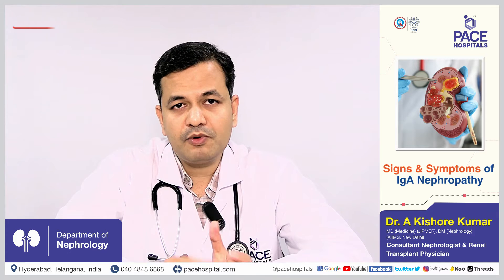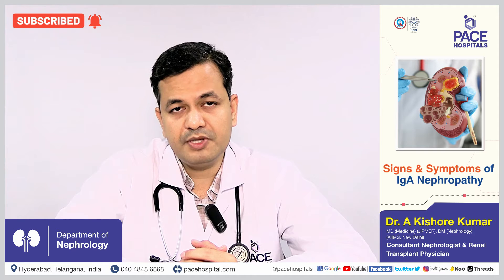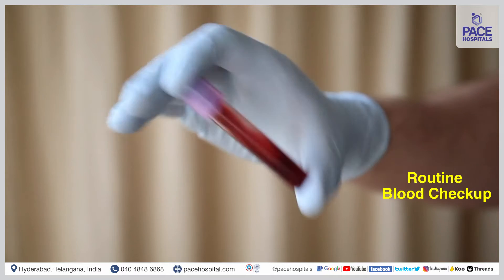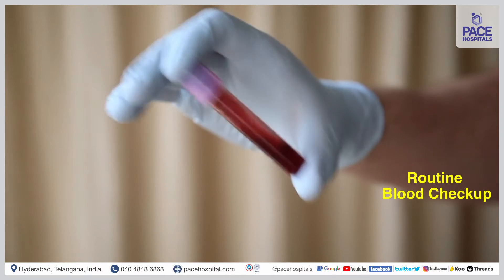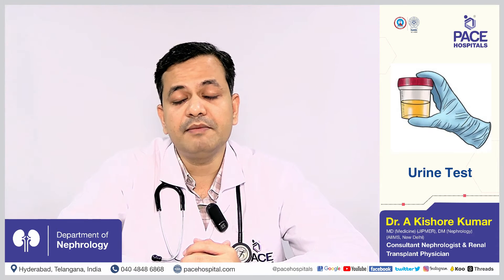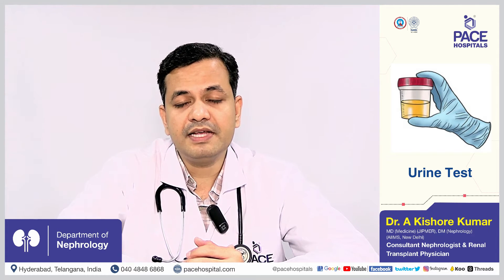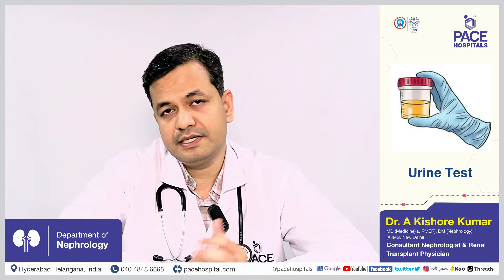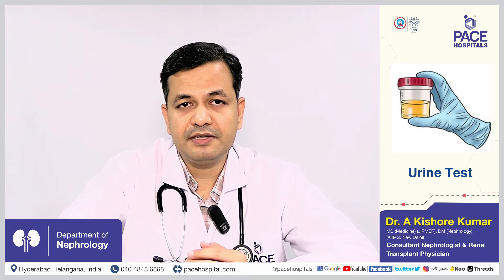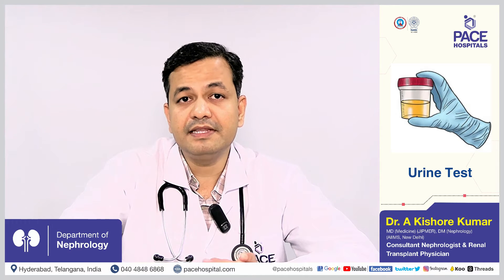IgA nephropathy is a kidney problem where there are no symptoms in the initial stages. Majority of patients are diagnosed during routine blood or urine checkups — for health, job, or other reasons — where protein in the urine, blood or red blood cells in the urine, or raised creatinine are found. These are the usual lab abnormalities, and most patients would not have any symptoms in the early stages.